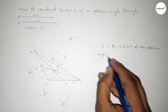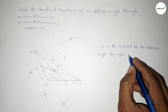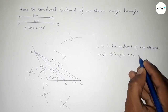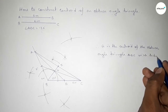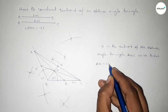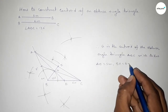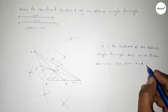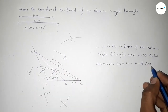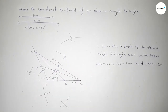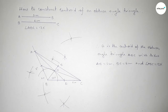To summarize: we constructed the centroid of triangle ABC with AB equal to five centimeters, BC equal to six centimeters, and angle ABC equal to 120 degrees. Thanks for watching — if this video was helpful, please share it with your friends, and please like, comment, and share.